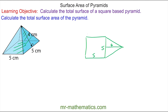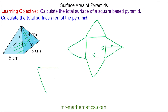There are four congruent triangles on each edge of the square. We're going to work out the area of one of the triangles, which I'll sketch here. We know the base is five and we know the perpendicular height is four, so the area of the triangle is five multiplied by four divided by two, which is 10.